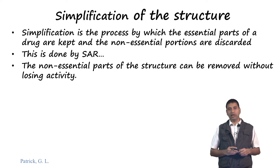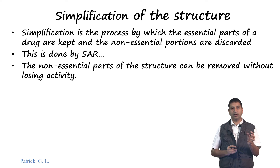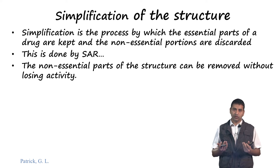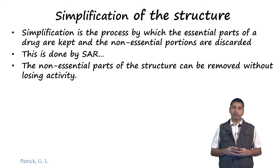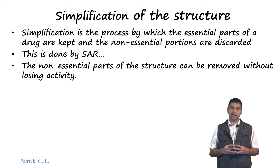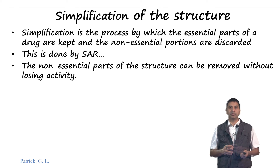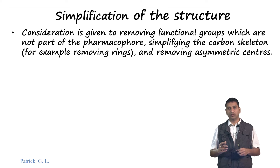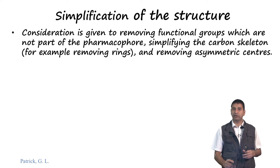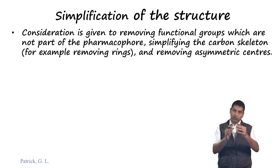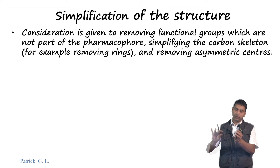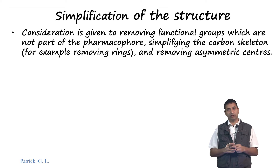The next strategy is simplification of the structure. As the name suggests, simplification is the process by which only the essential parts of a drug are kept and the non-essential parts are discarded, determined through detailed structure-activity relationship (SAR). We remove parts one by one and find out which are important for activity. If removing a part does not change activity, it is classified as non-essential. A lot of consideration is given to removing functional groups which are not part of the pharmacophore, keeping the pharmacophore intact while removing, for example, rings not essential for binding.